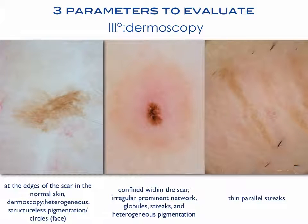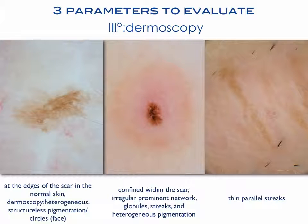With dermoscopy, we can improve our differential diagnosis. In melanoma, we see the presence of pigmentation at the edges of the scar going to the surrounding normal skin. The dermoscopic pattern is usually heterogeneous or structureless pigmentation, and on the face we can see grey circles.